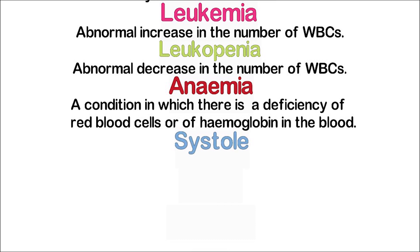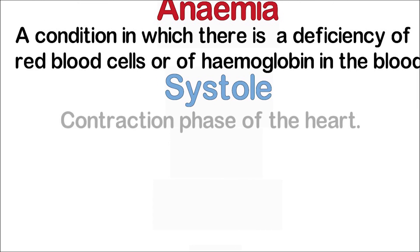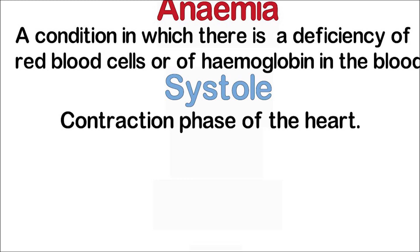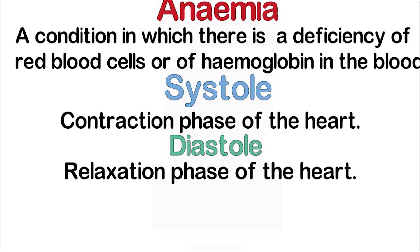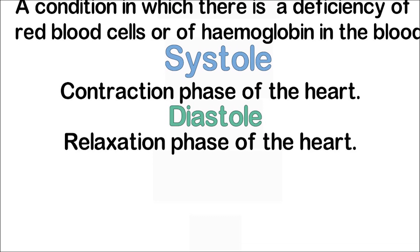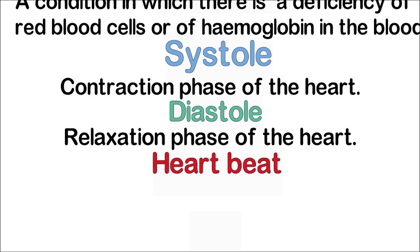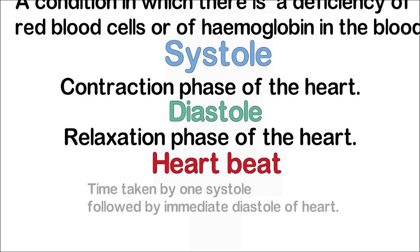Systole is the contraction phase of the heart — when the auricles and the ventricles contract, the phase is called systole. Diastole is the relaxation phase of the heart. Heartbeat is the time taken by one systole followed by immediate diastole of the heart.